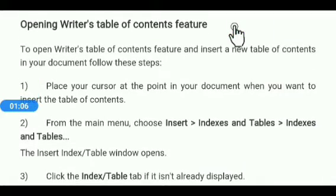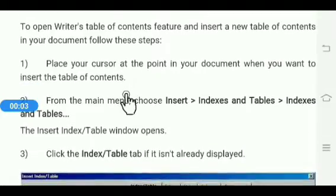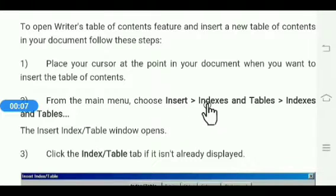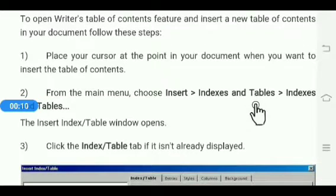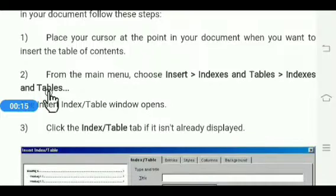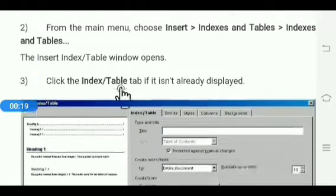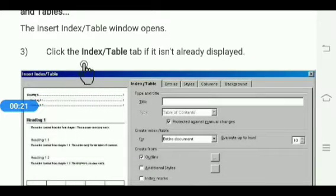To insert the table of contents, follow these steps: place the cursor on page number one, then from the main menu click on the Insert menu, then select Indexes and Table option. The Indexes and Table menu will appear; select Indexes and Table option to insert. The Index and Table window will open — click on the Index tab.